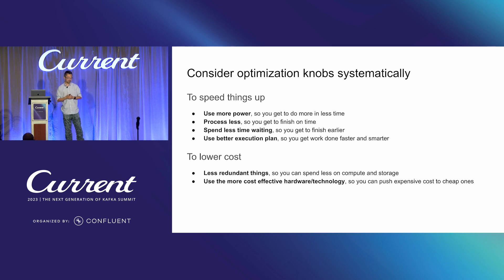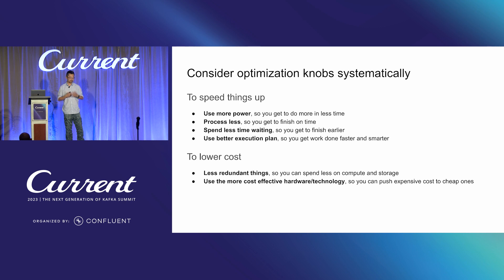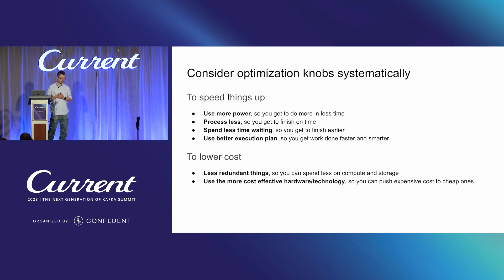To speed things up, there are a few options: use more power and scale up the job with more concurrency; process less by eliminating redundant processing; optimize waiting by reducing I/O waits; and use a better execution plan by picking the right join algorithms. To lower cost, the ideas involve doing less redundant processing or storing fewer redundant things, and using more cost-effective hardware or technologies.